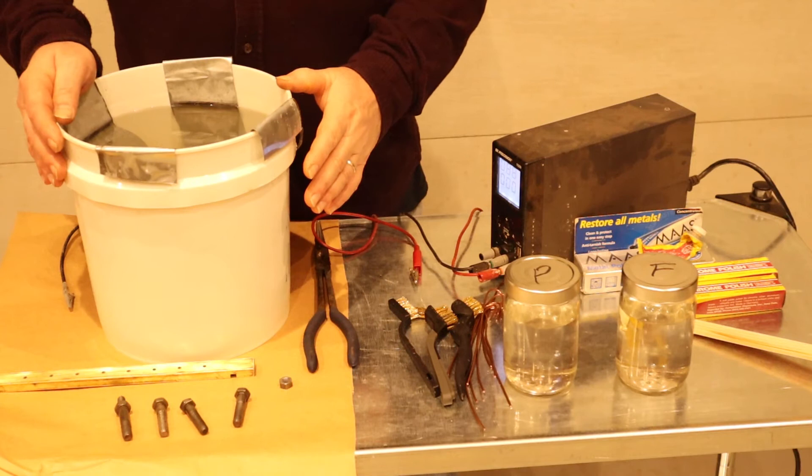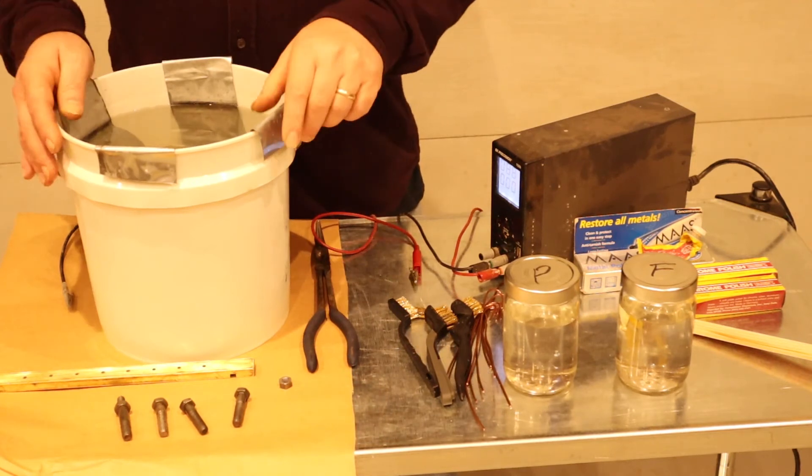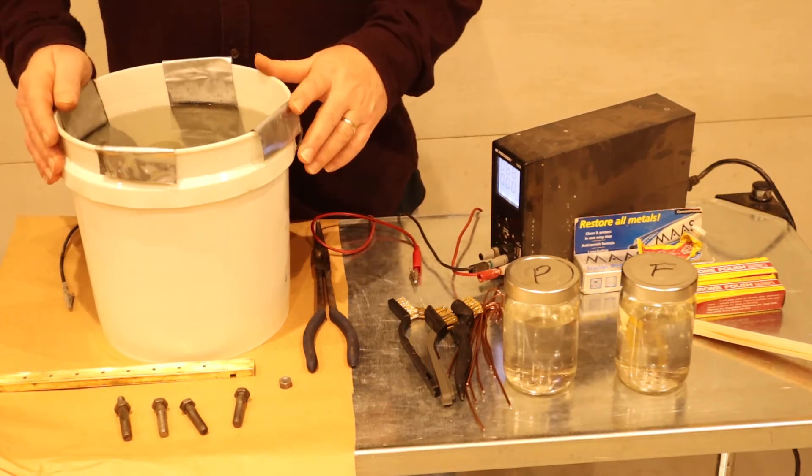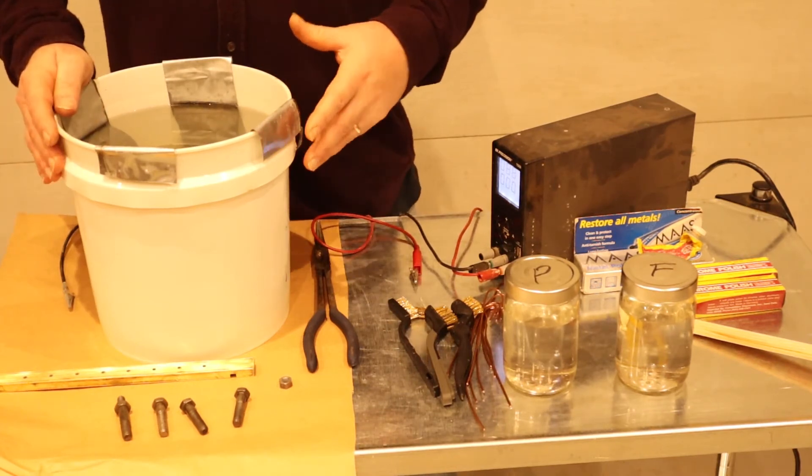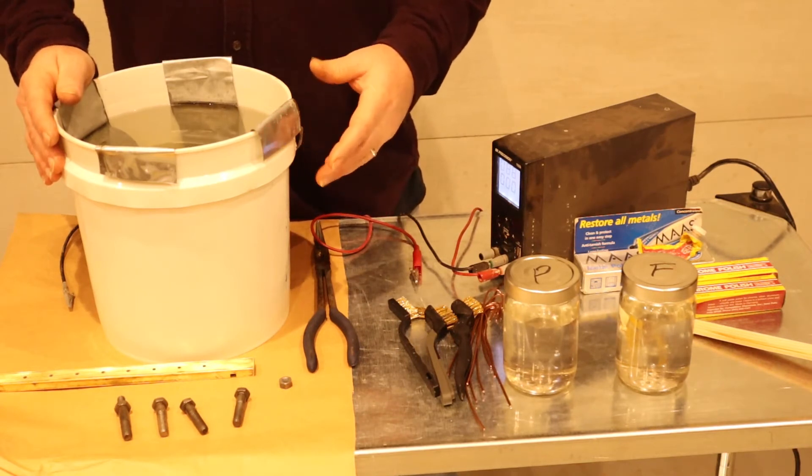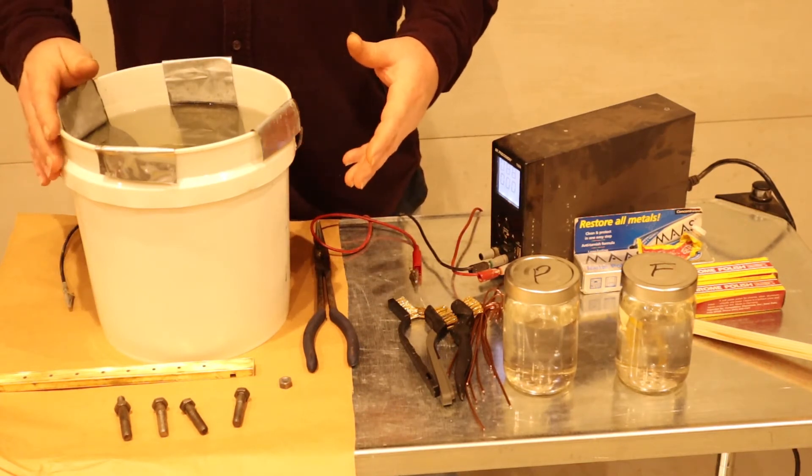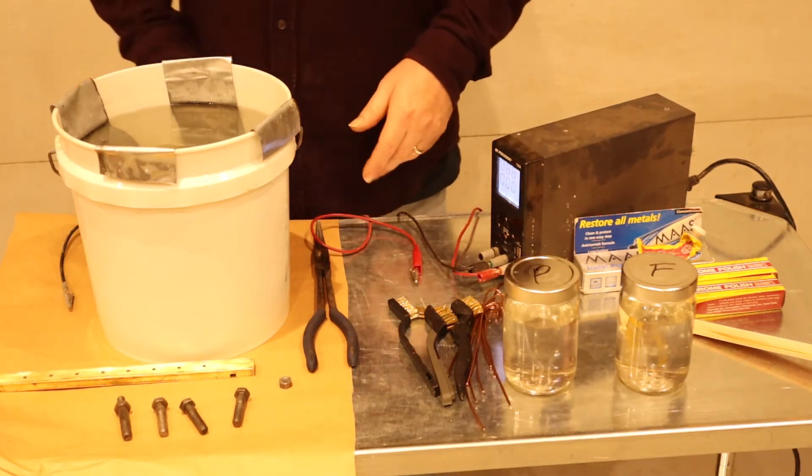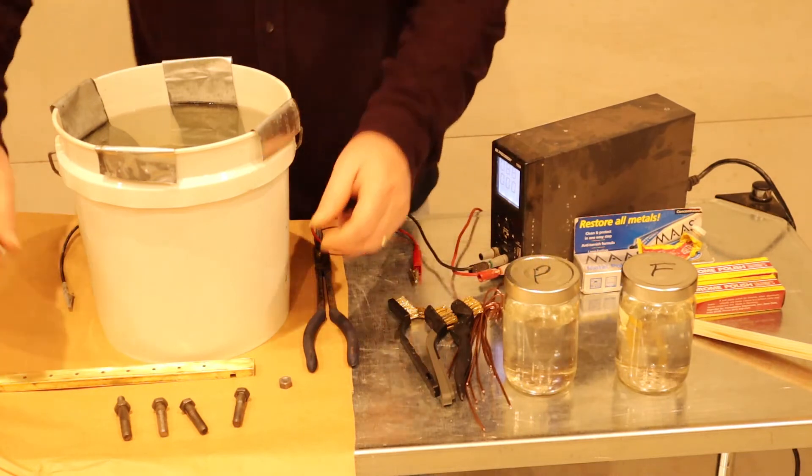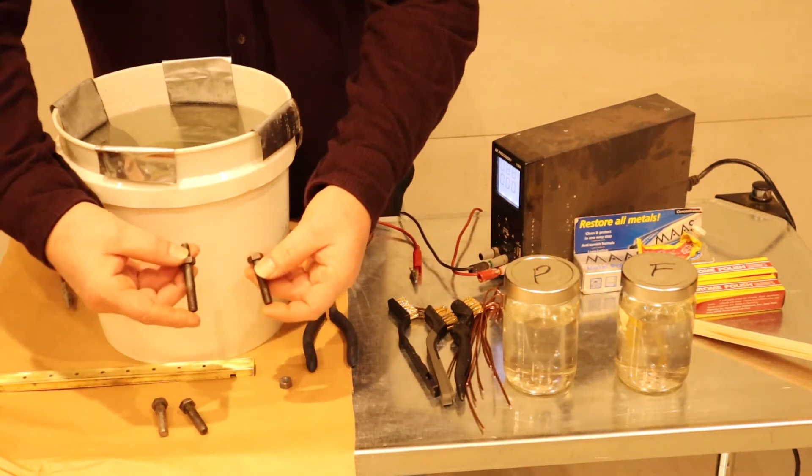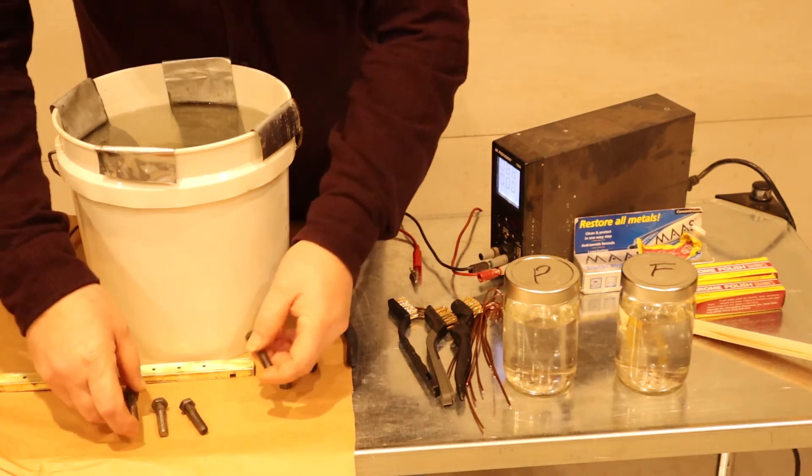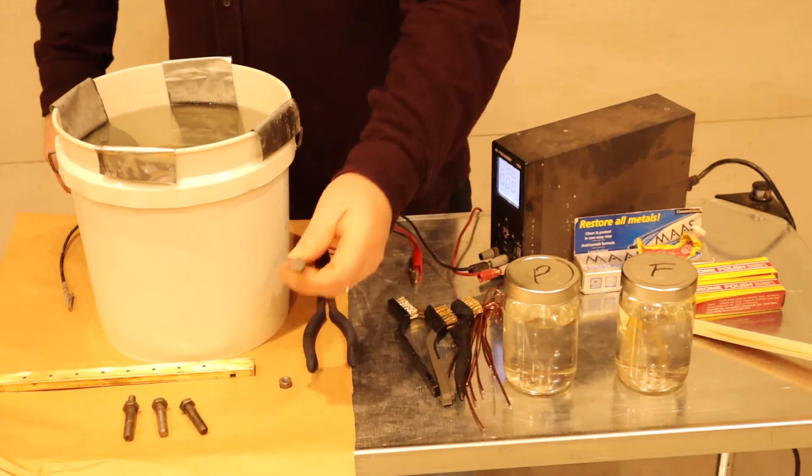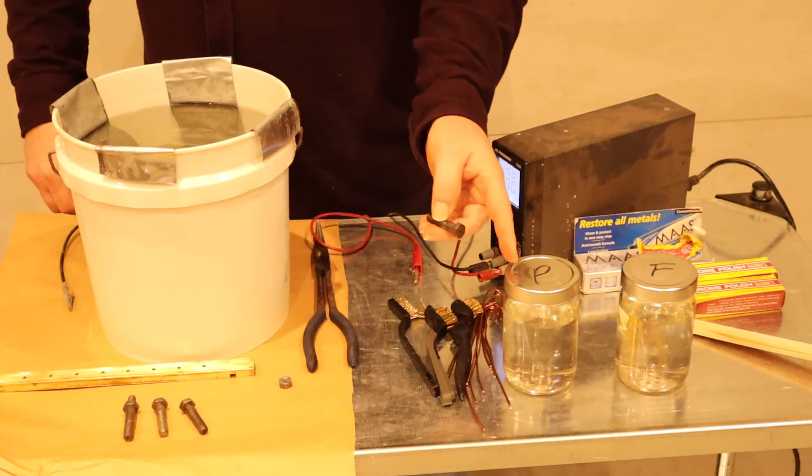Now that we have a zinc rich plating tank and we replace the zinc strips within the bucket, the proper terminology is called a charged tank, meaning that it's charged with zinc particles. We're going to start prepping our parts for plating. We have here a series of water pump bolts that we're going to plate.